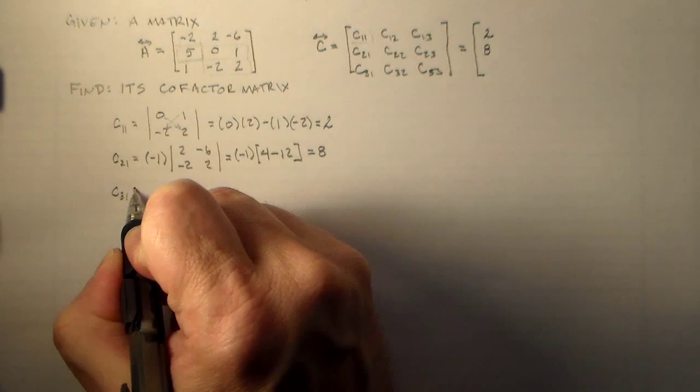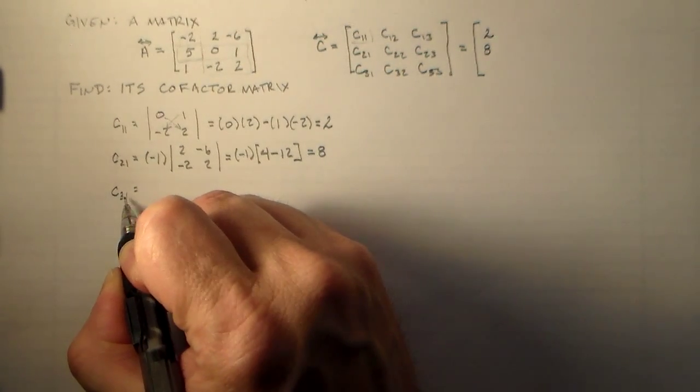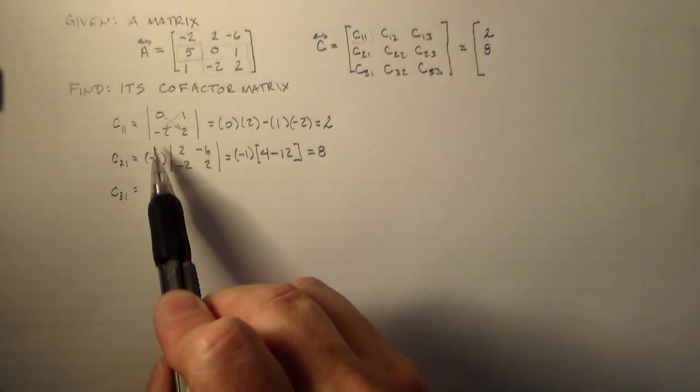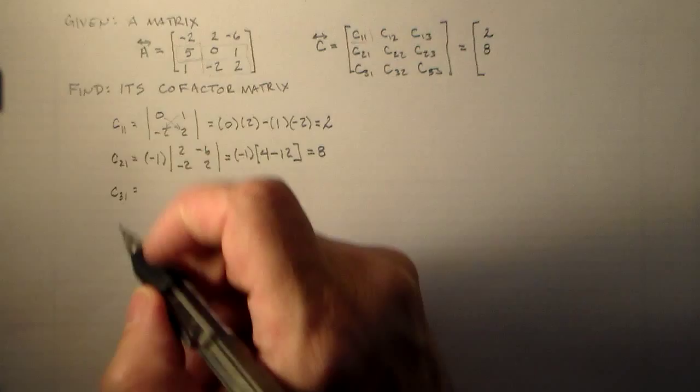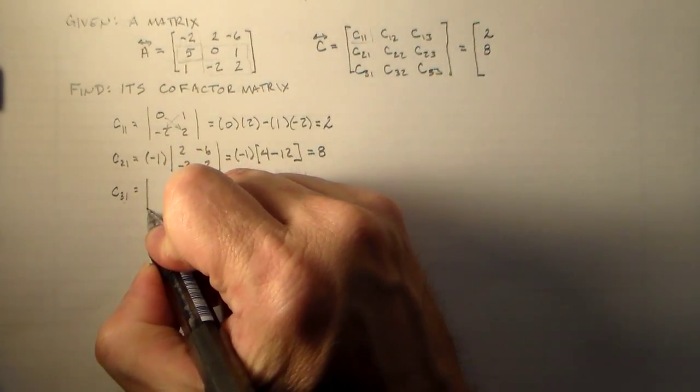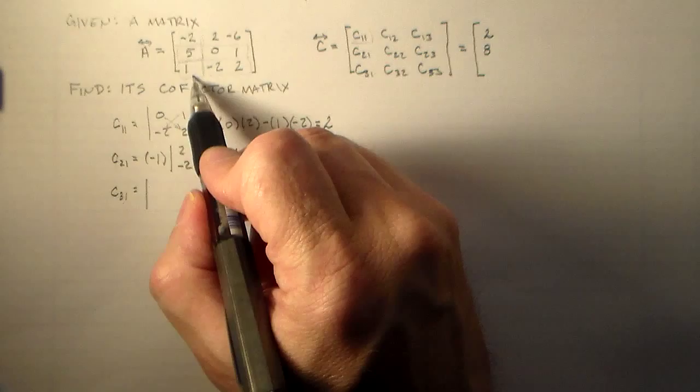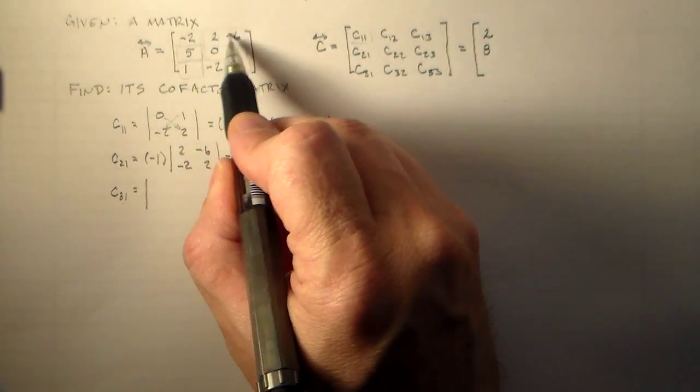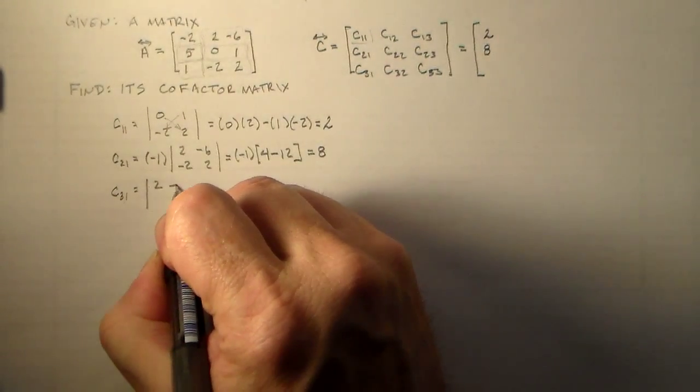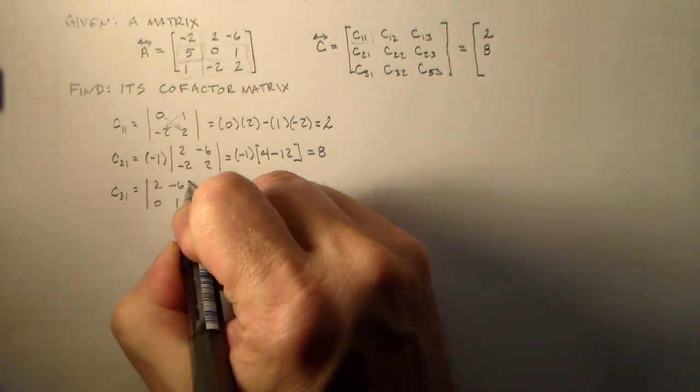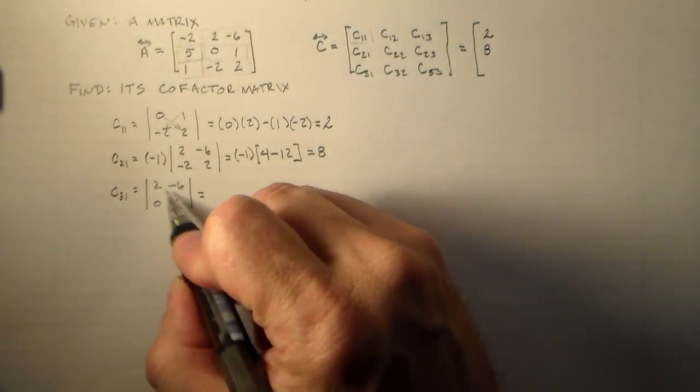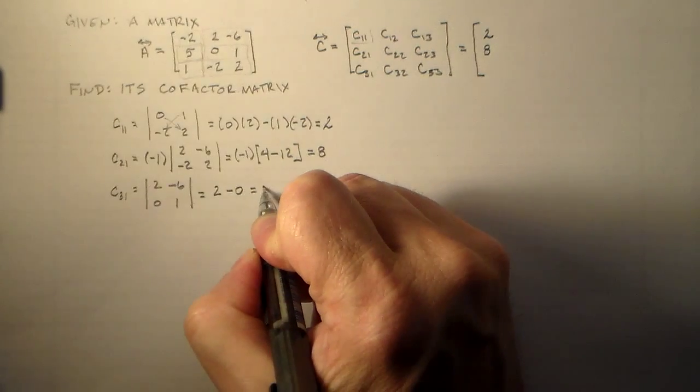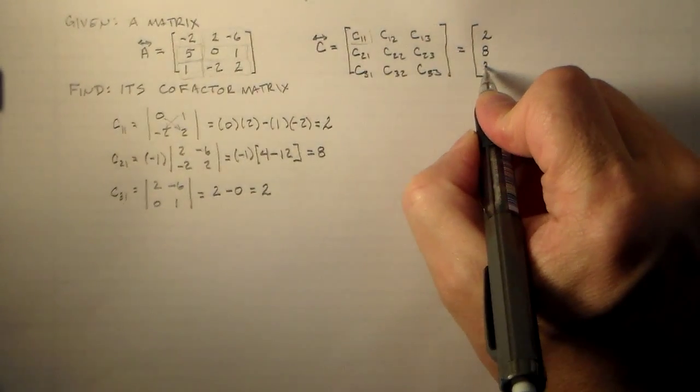C31 is equal, now we have 1, 2, 3 plus 1. That's 4. So that's an even number. When we sum the indices, that means we don't multiply by minus 1. So that means we have everything that's not in this row or this row. So we have this little submatrix here. 2, minus 6, 0, 1. And that's 2 times 1 is 2, minus 0, which is 2. So we're cruising along.